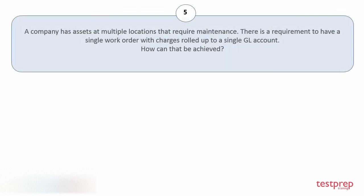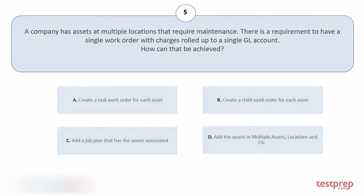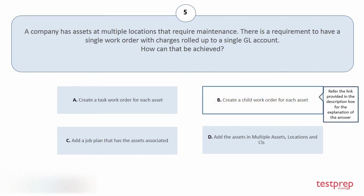Question number 5: A company has assets at multiple locations that require maintenance. There is a requirement to have a single work order with charges rolled up to a single GL account. How can that be achieved? Your options are: a) Create a task work order for each asset. b) Create a child work order for each asset. c) Add a job plan that has the assets associated. d) Add the assets in multiple assets, locations, and CIs. The correct answer is option b.